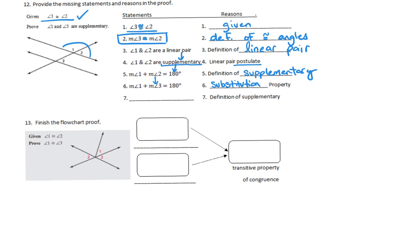Since angle 1 + angle 3 = 180, that means angle 1 and angle 3 are supplementary — by the definition of supplementary. And that completes the proof.